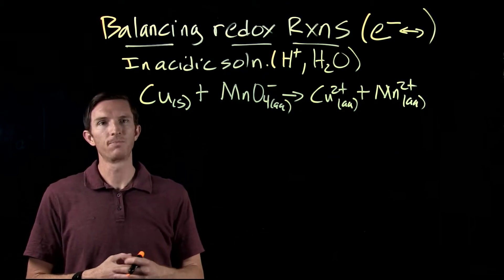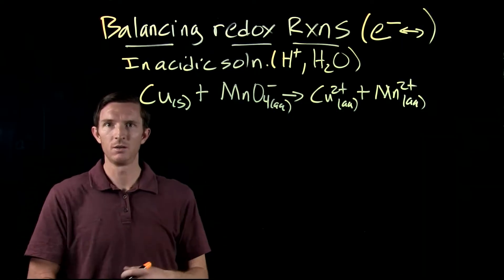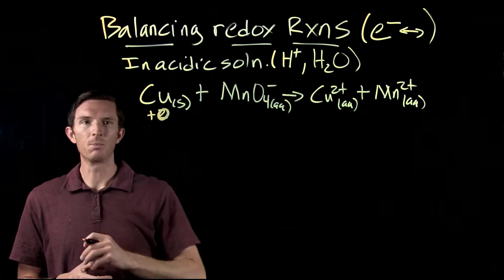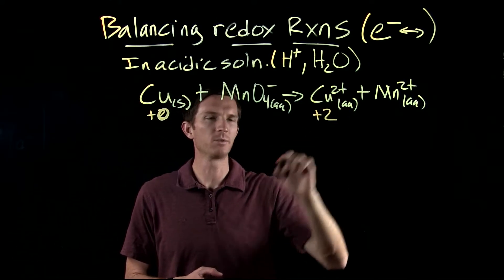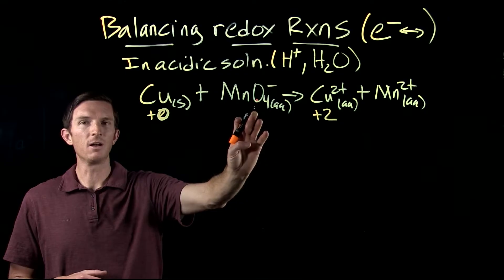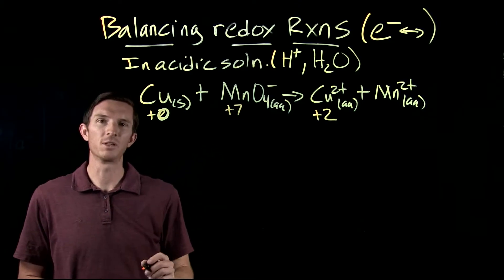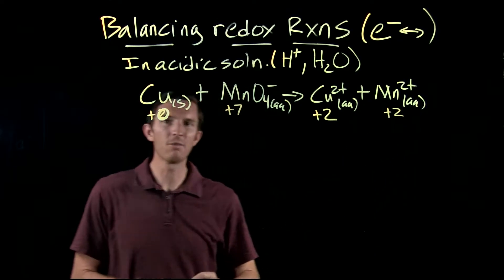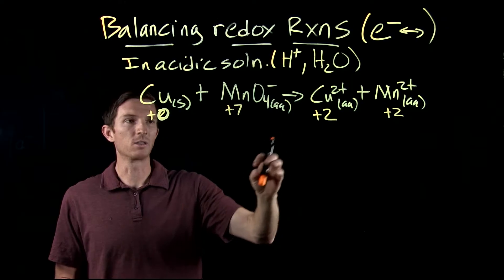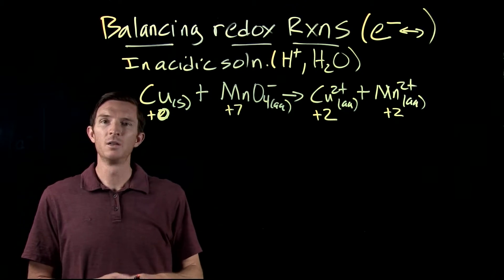We're going to break it up into the two half reactions by looking at what's changing. The oxidation number for neutral copper is zero, and it forms copper two plus with an oxidation number of plus two. For manganese in MnO₄⁻, the oxidation number would be plus seven, and Mn²⁺ has plus two. So copper goes from zero to plus two — it's losing electrons and being oxidized — and manganese goes from plus seven to plus two, gaining electrons and being reduced.